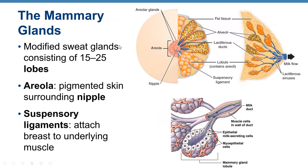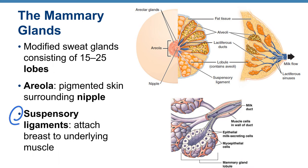Mammary glands are modified sweat glands consisting of 15 to 25 lobes. Suspensory ligaments attach the breast to the underlying muscle and create septa between the glands, dividing the breast into lobules.